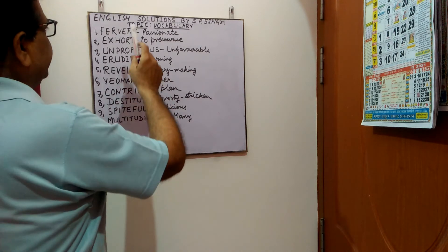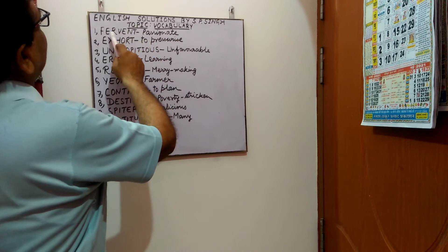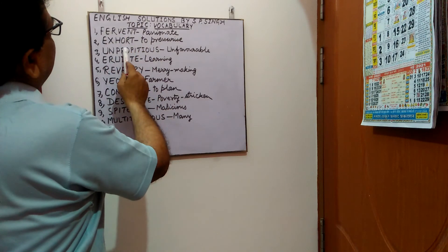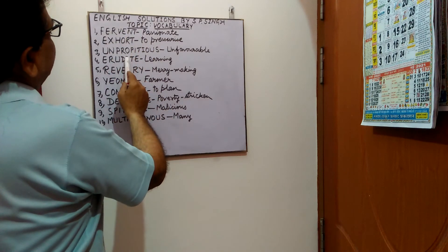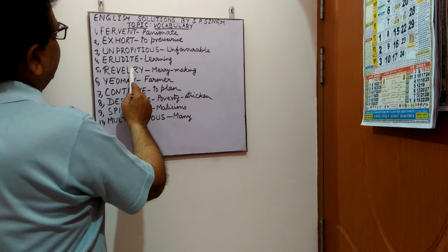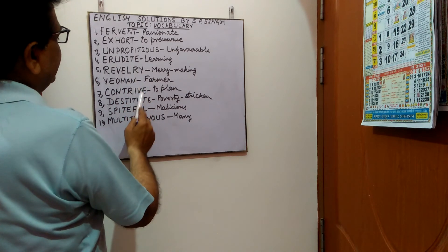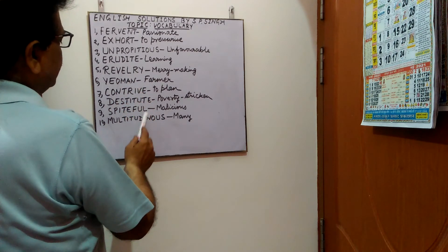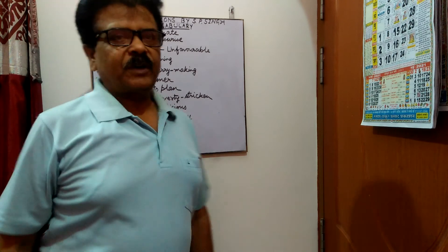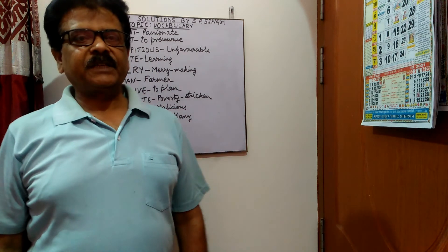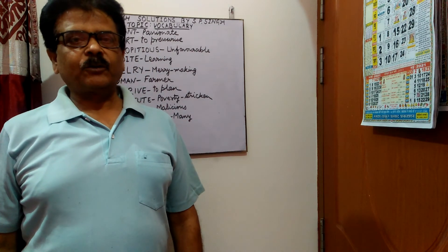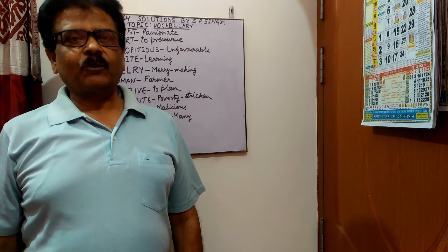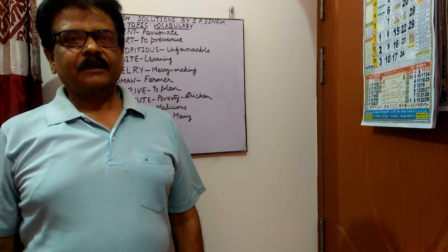So the words presented in this video are: ferment, exhort, unpropitious, erudite, reveling, contrite, destitute, spiteful, and multitudinous. Ten words and their meanings are presented for your use. Please keep learning and improving your writing skill, as this will certainly help in your exams.